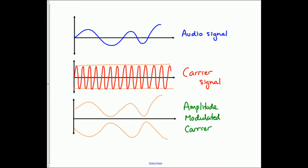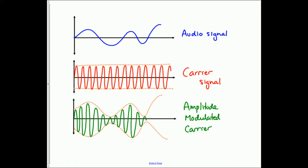Now I fill in the carrier signal at a constant frequency. I've got 14 peaks on the red line, so I want about 14 on the green line. I fill in between my construction lines, and my carrier is now a constant frequency but its amplitude is changing according to the shape of the blue line.